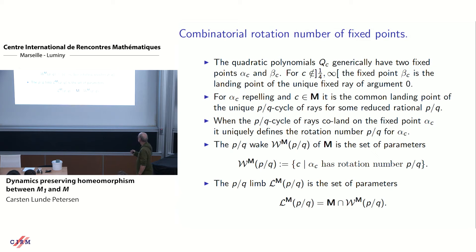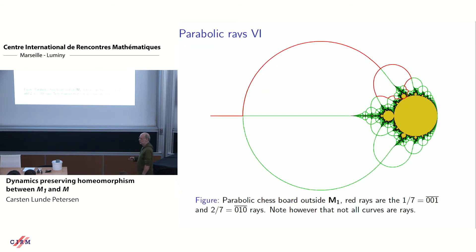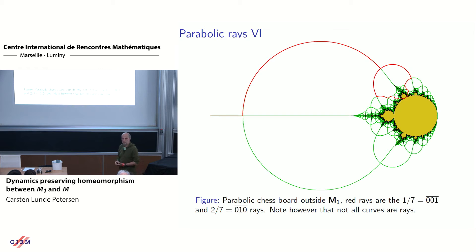We can define the wake—the p/q wake—as the set of parameters c such that alpha_c has combinatorial rotation number p/q. And we can define the limb as the intersection of the Mandelbrot set with the p/q wake. We have a similar situation for quadratic rational maps. For quadratic rational maps, the one-third wake is bounded by the 1/7 ray and the 2/7 ray coming down, which when they bifurcate start to surround the little disk corresponding to the one-third wake for the parabolic Mandelbrot.